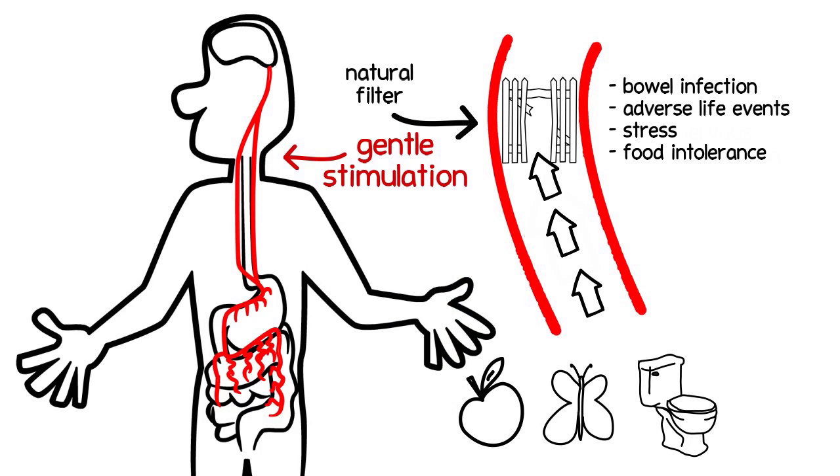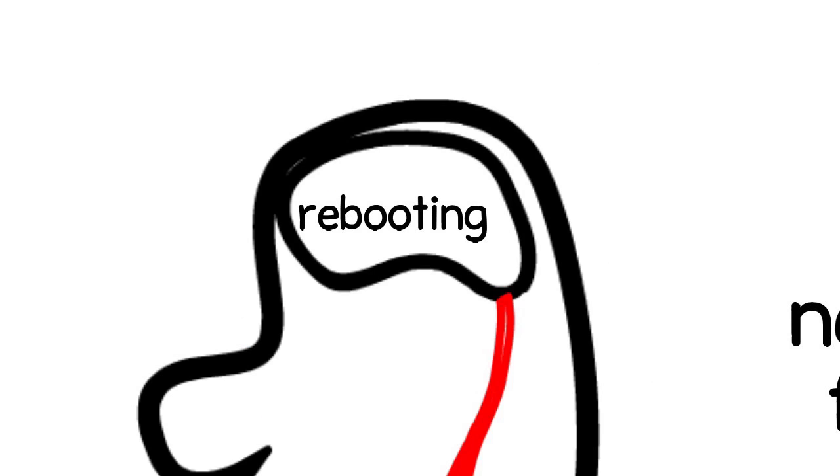This switches on a special group of fibers in the vagus nerve that can restore balance back to the filtering system, and unwanted signals may again be blocked. It's a little like rebooting the system.